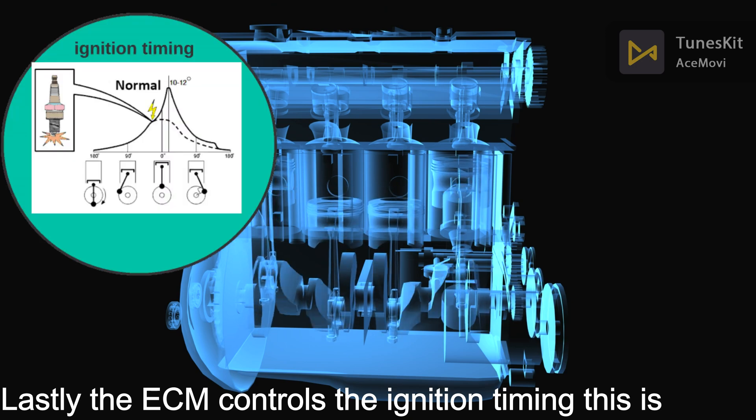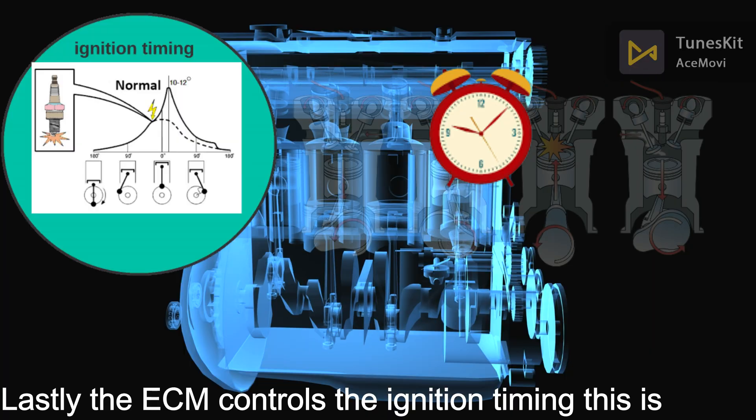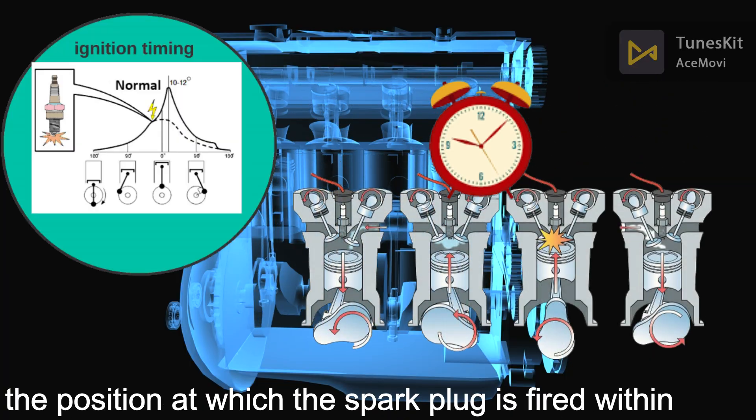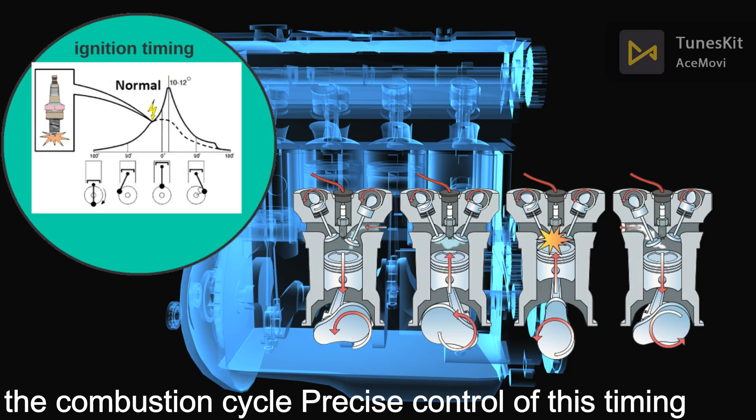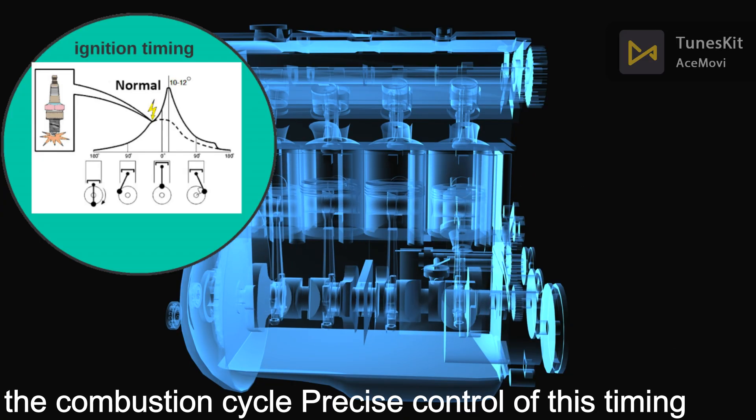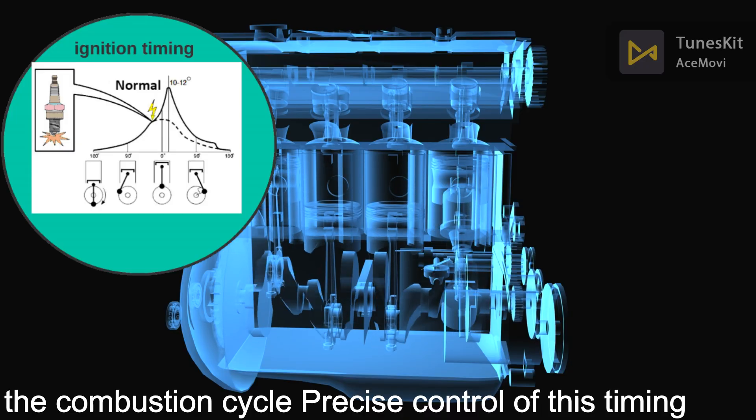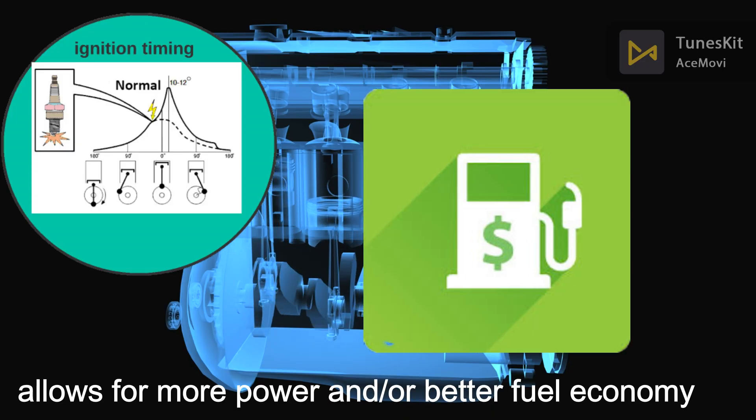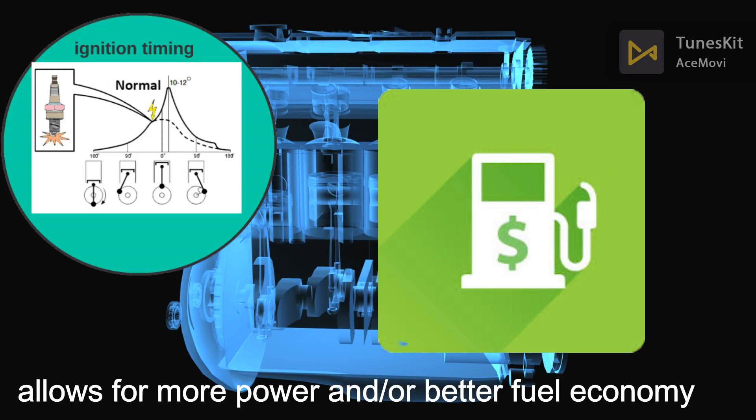Lastly, the ECM controls the ignition timing. This is the position at which the spark plug is fired within the combustion cycle. Precise control of this timing allows for more power and/or better fuel economy.